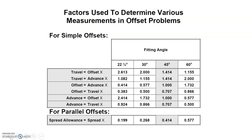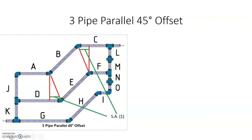To get started we need to know our offset factors from the offset factor table. Since we're looking at 45 degrees, we go to the bottom of the page where it says 'for parallel offsets.' To find the spread allowance we take the spread and multiply it by the factor, which for 45-degree offsets is 0.414.